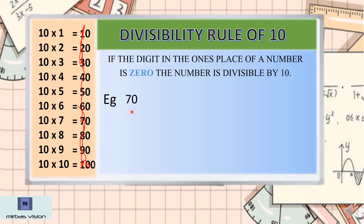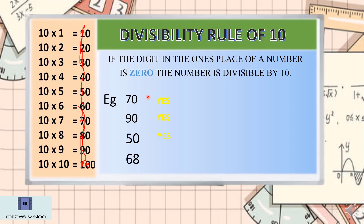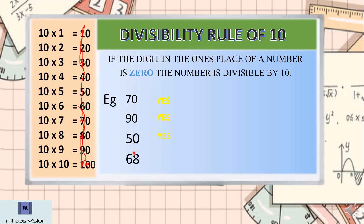First example: 70 — yes, it is divisible. Next example: 90. Is 90 divisible? Yes. 50 — is it divisible? Yes. Next example: 68. Is it divisible? No, because 8 is coming in the ones place. The rule says 0 should come, and here 8 is coming, so no.